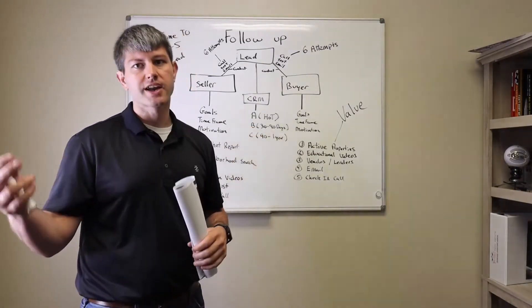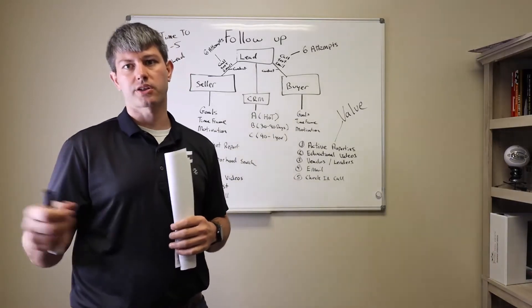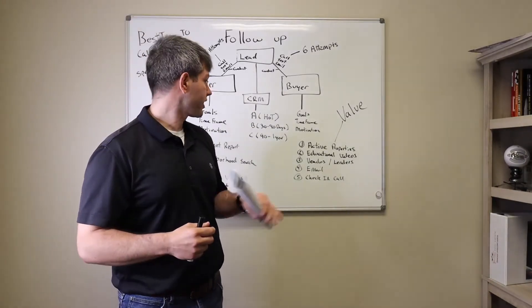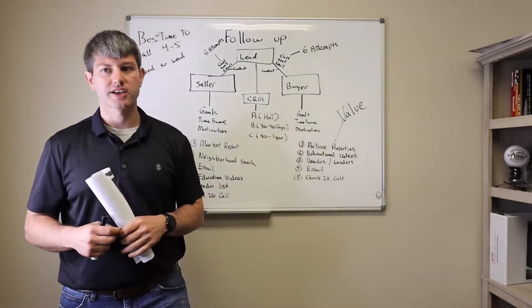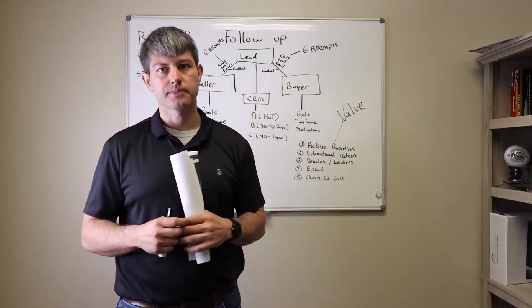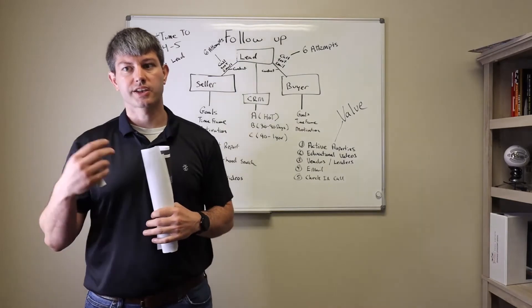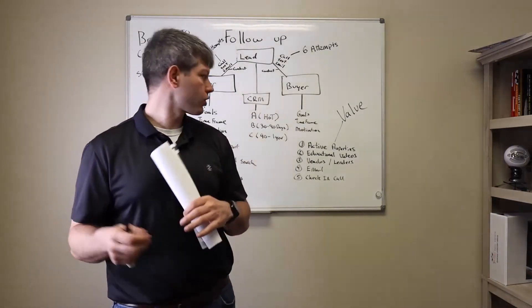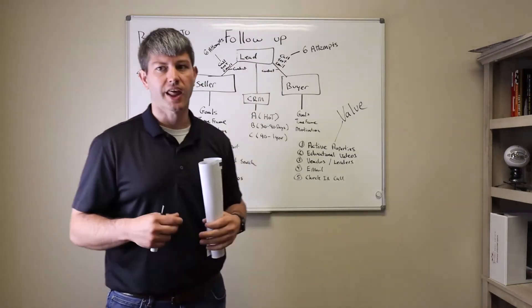Versus a B, which is 30 to 90 days - they're 30 to 90 days out, we talk to them bi-weekly to stay in front of them so we can build trust. A C is 90 days to a year out - we're going to contact them once a month and stay in touch with them, let them know that we're still there for them.